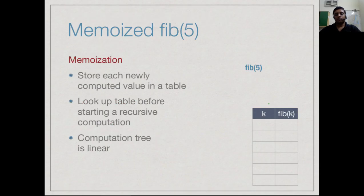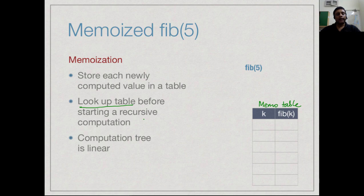We have a memo table where we will keep different values of k as we compute them. We assume that we have computed nothing — we do not even know the base case — and we are just going to apply the recursive definition. But every time we compute something, we will first look up the table before computing it recursively, and if we do compute it recursively, we will store each newly computed value back in the table.